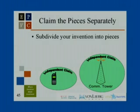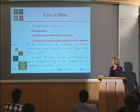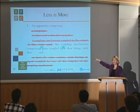When you get your claims, subdivide your invention into as many pieces as possible. If you invented a new communication system, you should have one independent claim to the receiver and one to the transmitter. Also remember: in the claims, less is more. A typical mistake from outside counsel: say you invented a coupling mechanism using bubblegum and shoestring to allow a single video card to drive more than 50 video screens. A bad claim would include: a computer, a video card within the computer, the coupling mechanism, and at least 50 video screens. If a competitor sells only the coupling mechanism, he doesn't infringe because his product doesn't have a computer, video card, or 50 screens. Strip out all that surrounding context—tell your attorney you invented the coupling mechanism and all the rest can come out.